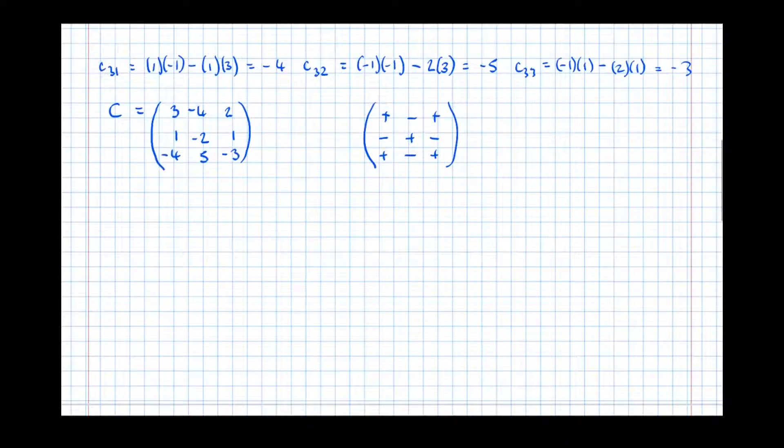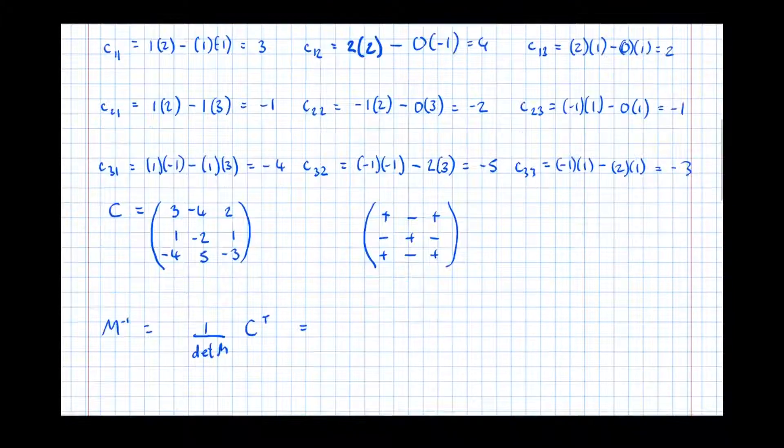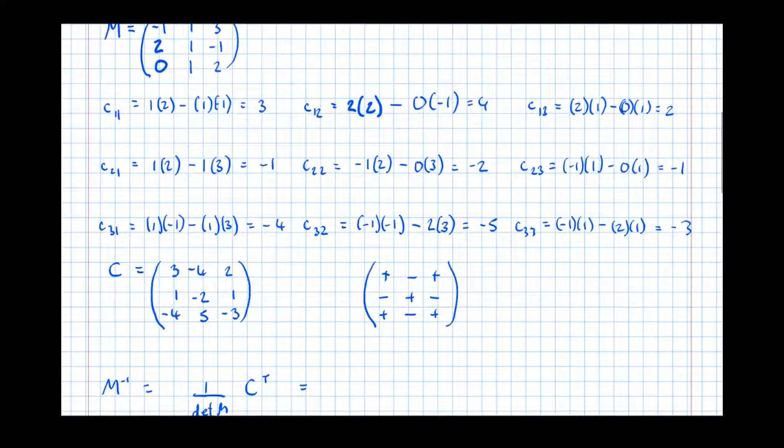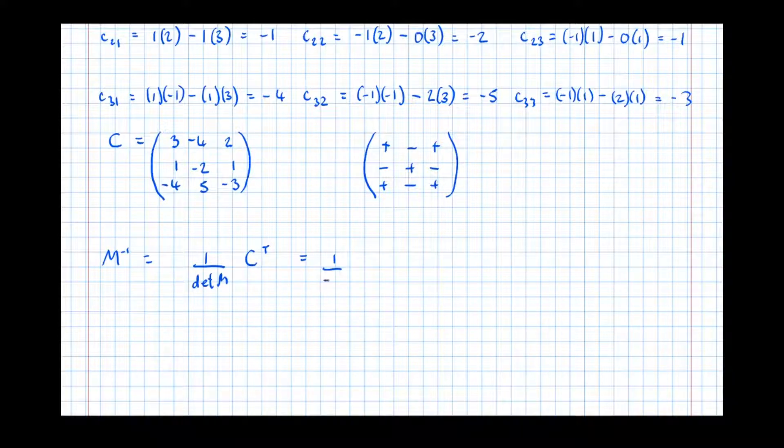So now, almost there. So the inverse of M is 1 over the determinant of M times the transpose of C. So equals, so 1 over the determinant of M. And we worked out the determinant earlier to be -1. So 1 over -1 times the transpose of C.